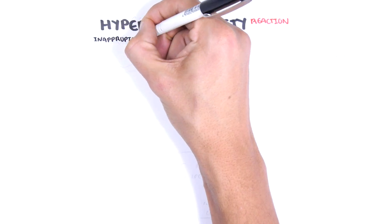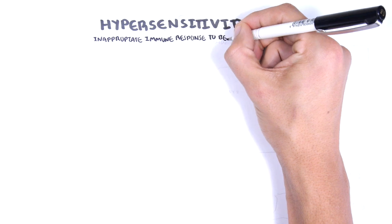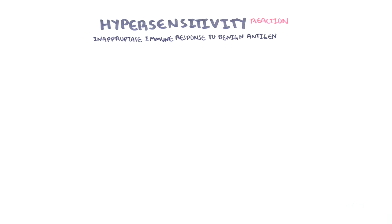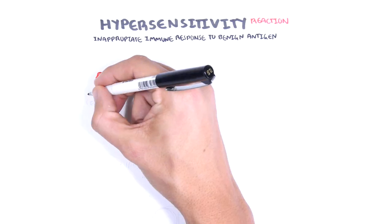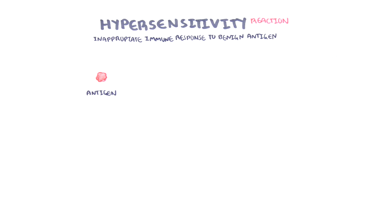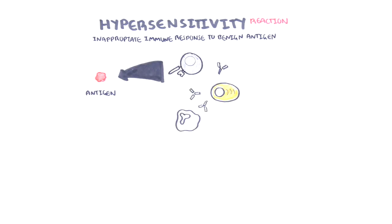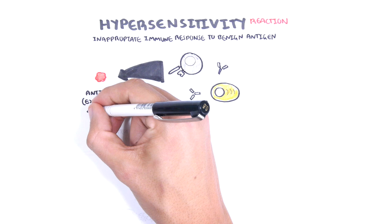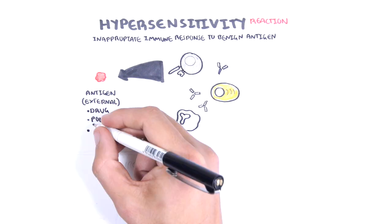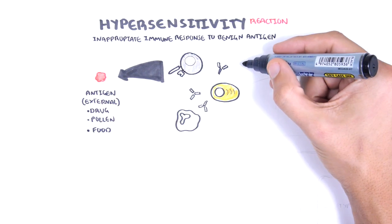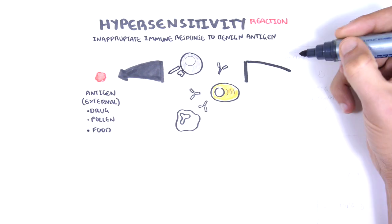Hypersensitivity reactions are exaggerated or inappropriate immune responses to a benign antigen. It is the immune response and not the antigen that is actually harmful. An external antigen, such as a drug, pollen, or food, can elicit an inappropriate immune response.